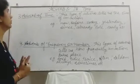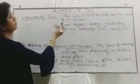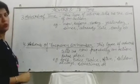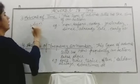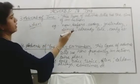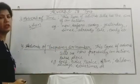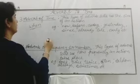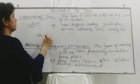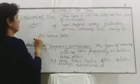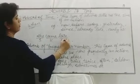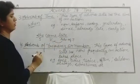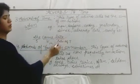The third type is adverb of time. This type of adverb tells us the time of an action, or gives the answer to the question 'when.' Examples include: now, before, today, yesterday, since, already, late, early. For example: 'She came late.' Here, 'she' is the subject, 'came' is the verb, and 'late' is the adverb of time, giving the answer of when she came.